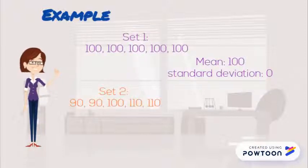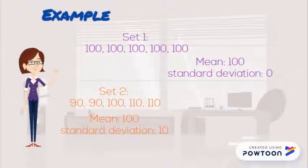On the other hand, set 2 data, which is shown below, has a mean of 100, but the standard deviation would be 10, because each of the four points are on average 10 points away from the mean.